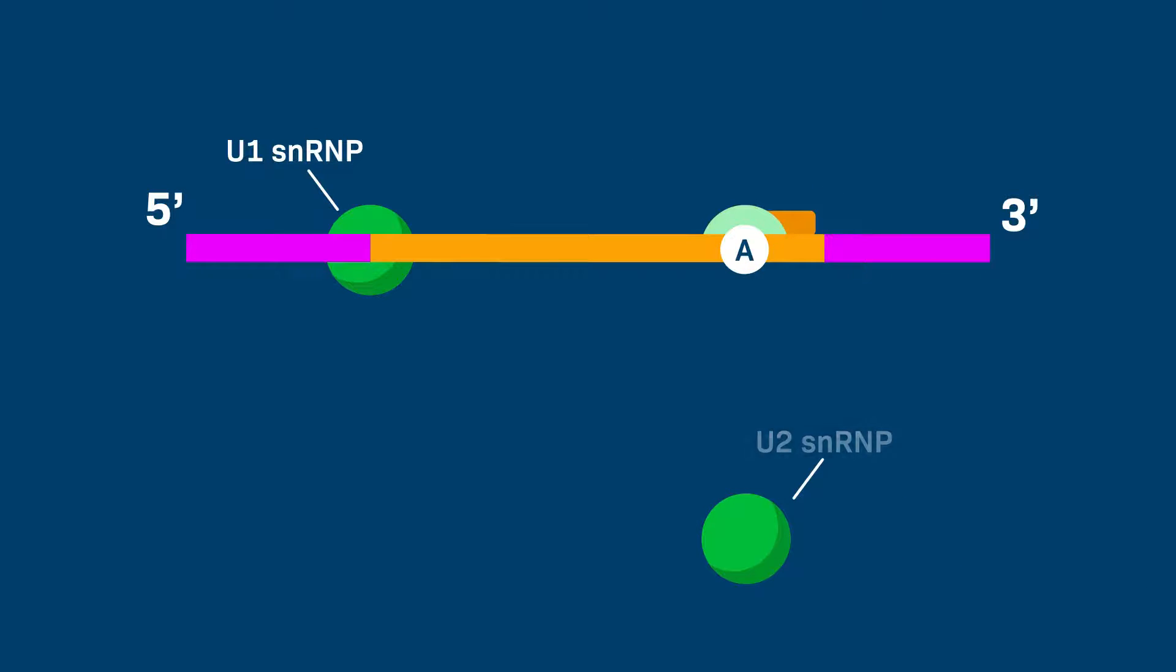Next, the U2 SNRP base pairs with the branch point site, displacing the bound proteins.